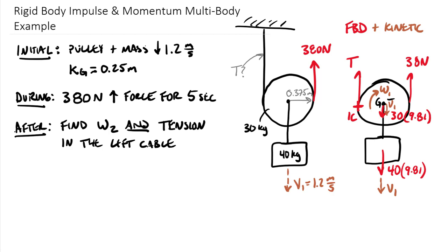Now we're faced with some choices. The main choice is whether to sum moments about our centroid versus summing moments about our instantaneous center of zero velocity. It just depends on how many unknowns you want in your separate equations. For this exercise, we're going to sum our moments around the IC — that should make the motion terms, ω and the linear velocity V, the only unknowns in our angular impulse-momentum equation.